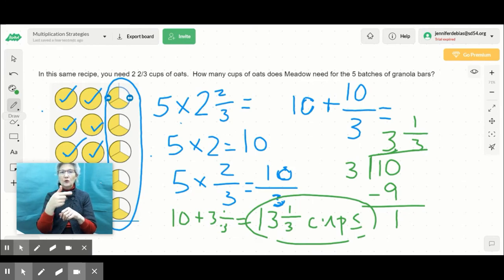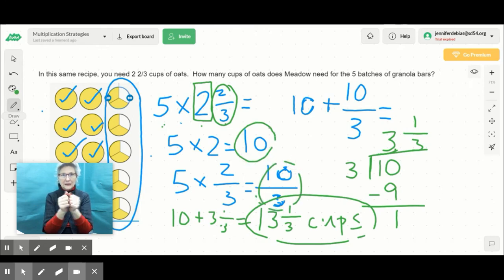So to recap this problem, because we did quite a bit on this, when you multiply a whole number by a mixed number, it really makes a lot of sense to use the distributive property and break your mixed number into a whole number and into a fraction. So we did our whole numbers multiplied together first, right? 5 times 2 equals 10. And then we took our whole number and multiplied it by our fraction, 5 times 2/3 to get 10/3. And then we're left with a fraction greater than 1, which we know how to turn into a mixed number. We can then add our two products together to get our final product.